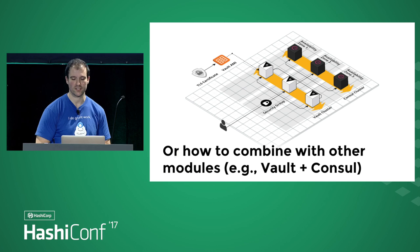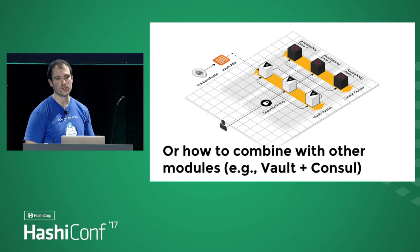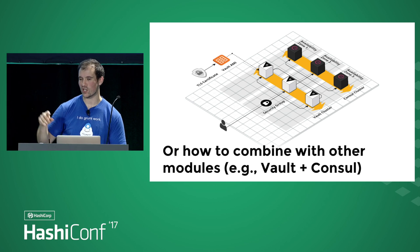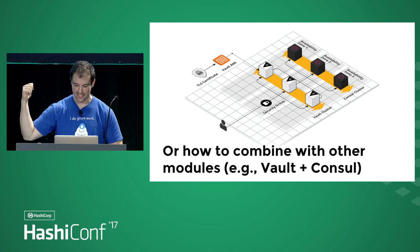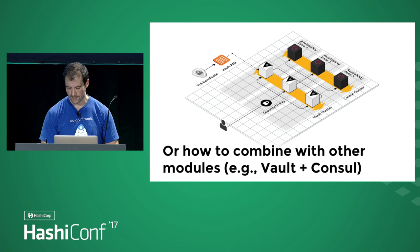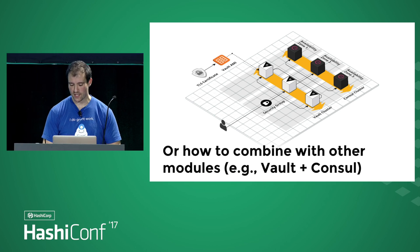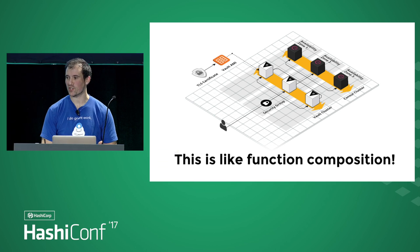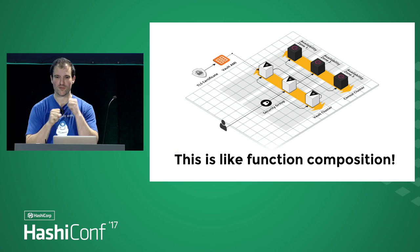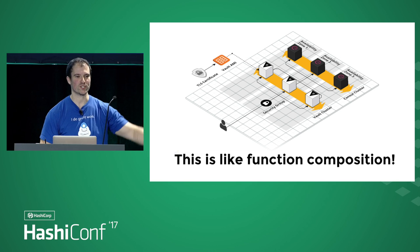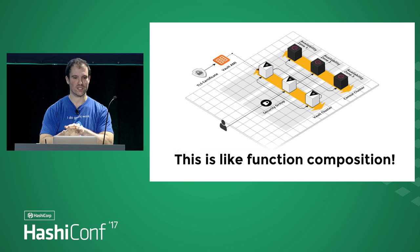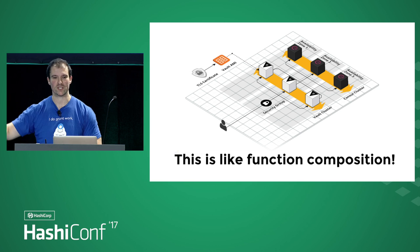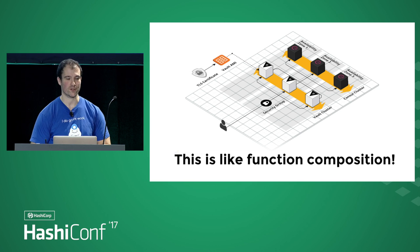Some of the examples combine not only sub-modules from Vault but also sub-modules from Consul or even completely other systems. We tend to use Vault with Consul, so we're using the Consul Terraform module in the example code as well. And if you think about it, it's function composition — we have one function that deploys Vault, one that deploys Consul, and we can cleanly put them together, taking the outputs from one and sending them as inputs to another.